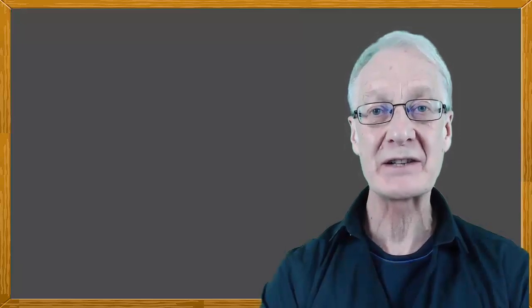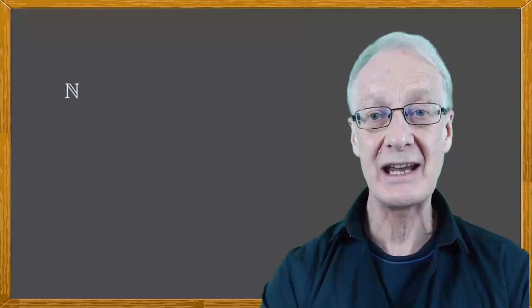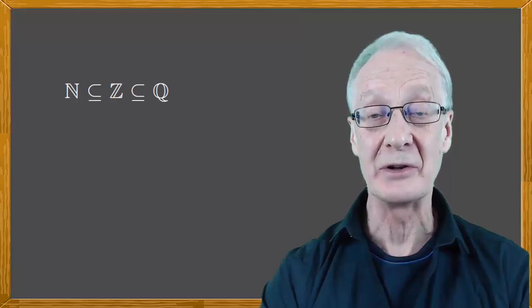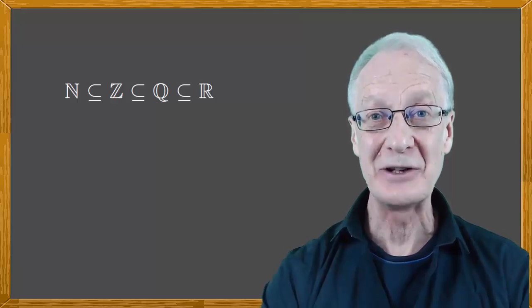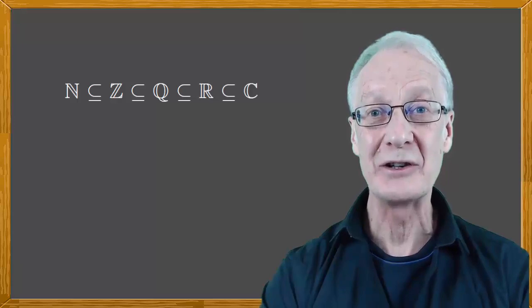We've seen how the different sets of numbers are related. The natural numbers are contained within the set of integers, which in turn is contained within the set of rational numbers. The rational numbers together with the irrational numbers is contained within the set of real numbers, which is contained within the set of complex numbers.